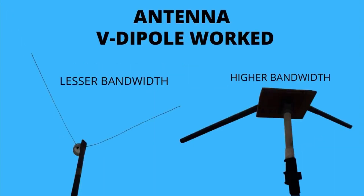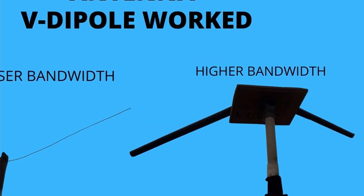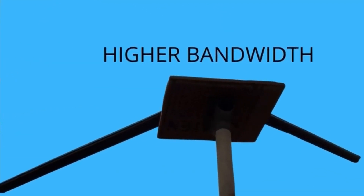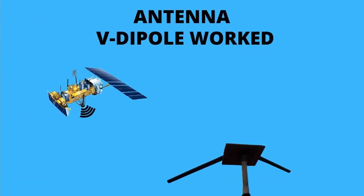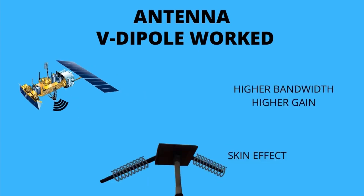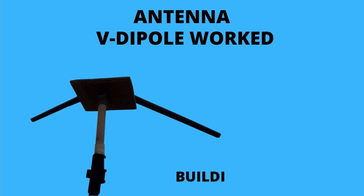Another antenna was made using the same dimensions but with an aluminum pipe, and it gave a higher signal gain as well as higher bandwidth. This is because RF travels on the skin of the conductor, not inside it — a phenomenon called the skin effect, applicable for higher frequencies. The cost of building this antenna was only 50 rupees.